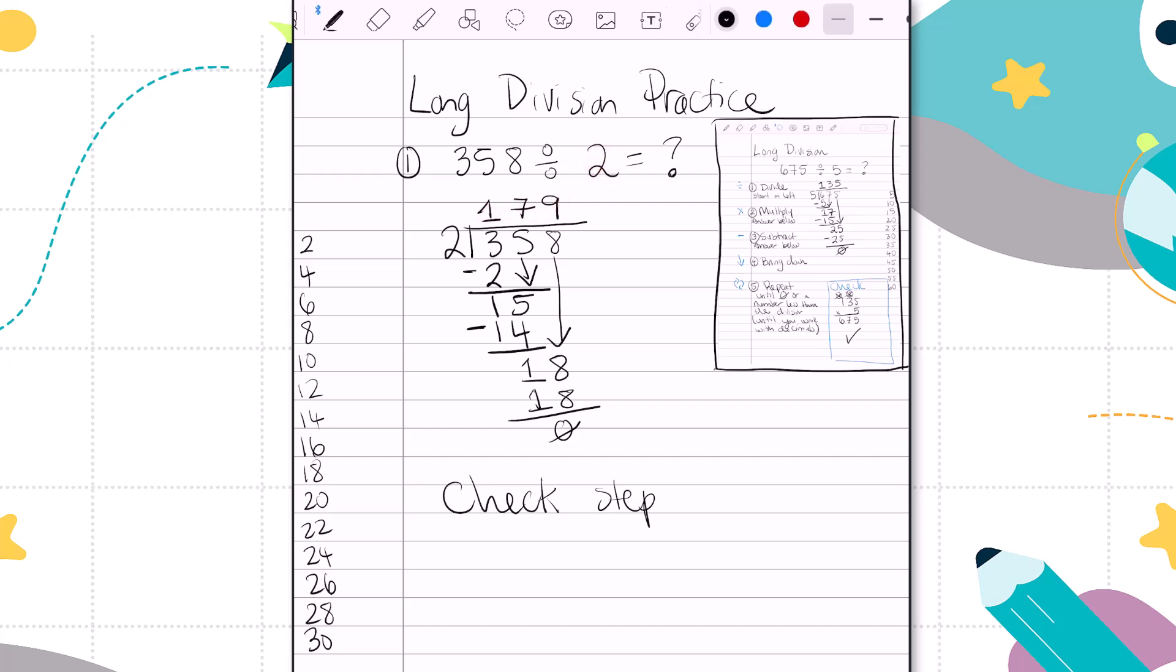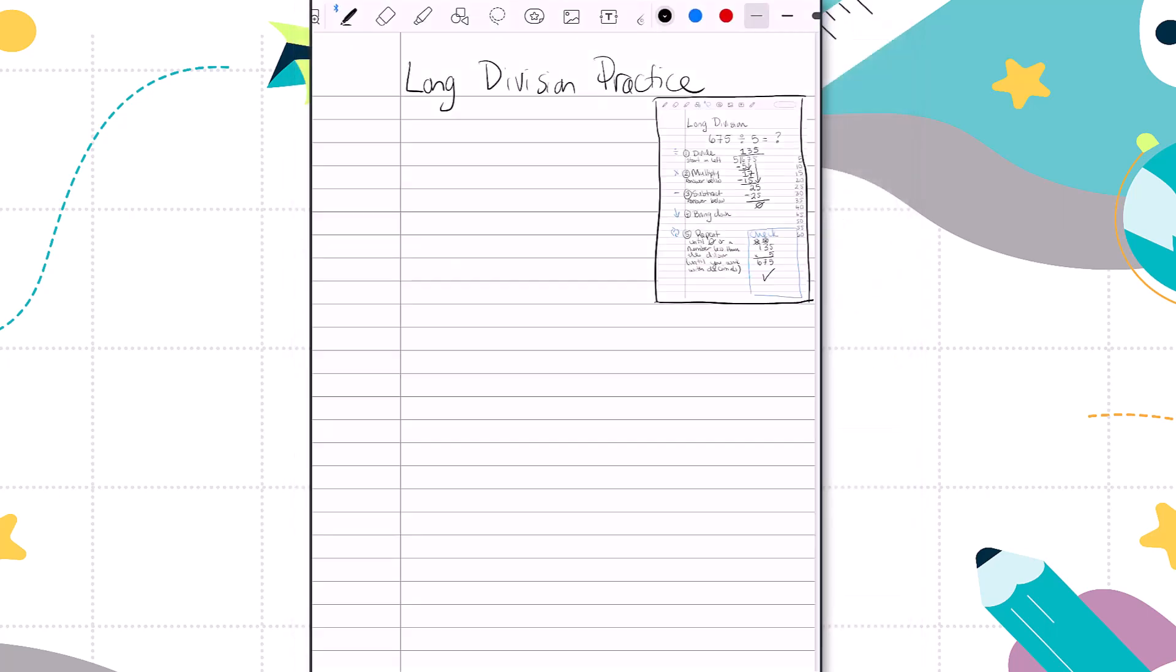And I'll complete standard algorithm multiplication. 2 times 9 is 18. 2 times 7 is 14, plus 1 is 15. And 2 times 1 is 2, plus 1 is 3. 358. And that was our dividend to begin with. So this does check out. 2 times 179 is 358. Which means 358 divided by 2 is the opposite.